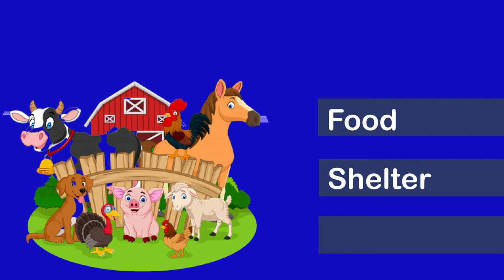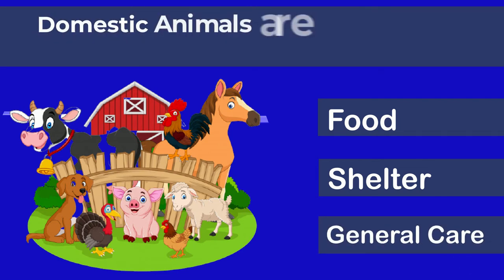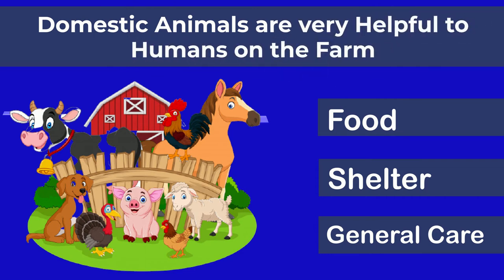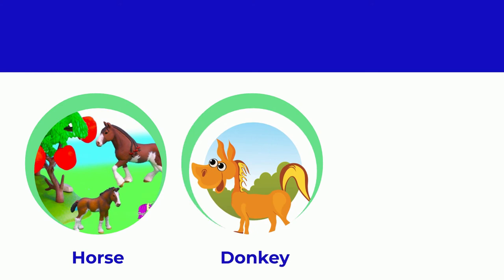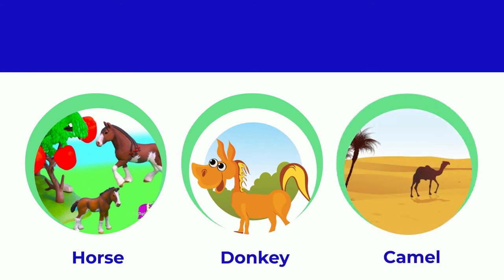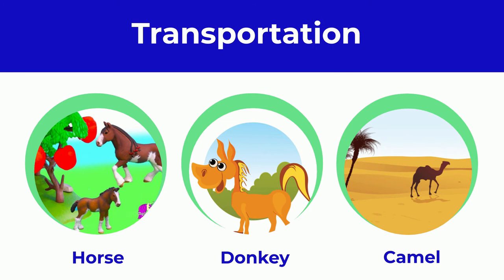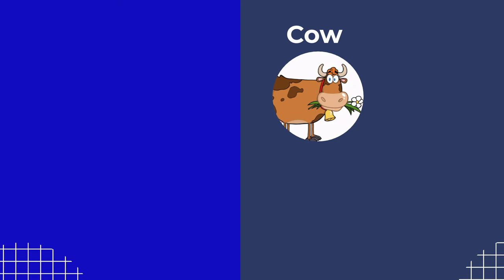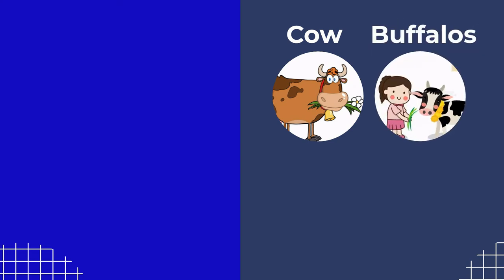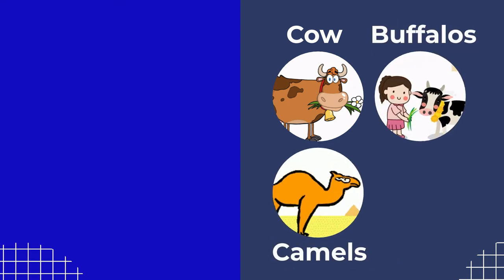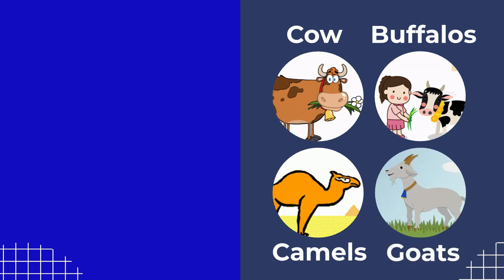Domestic animals are very helpful to humans on the farm too. Some animals like horses, donkeys, and camels are used for transportation. Some animals such as cows, buffaloes, camels, and goats are used to get milk and meat.